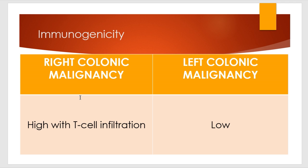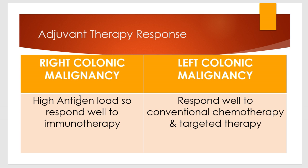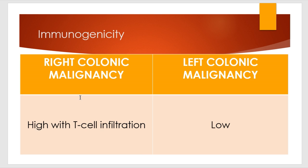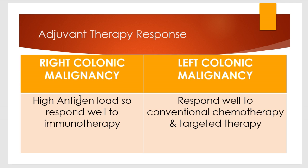To summarize: high immunogenicity in the right colon leads to good immunotherapy response, while low immunogenicity in the left colon leads to better response with chemotherapy and targeted therapy.